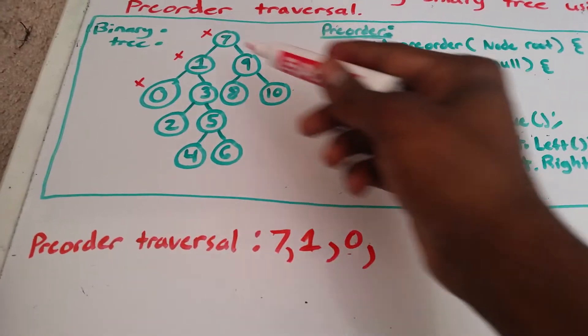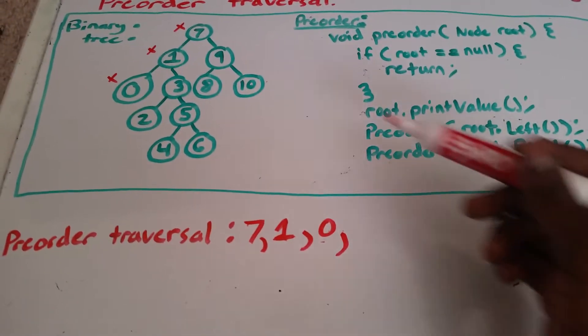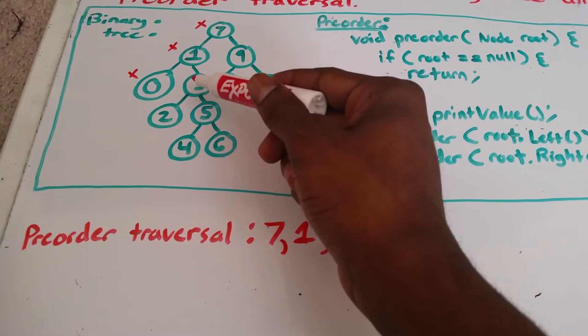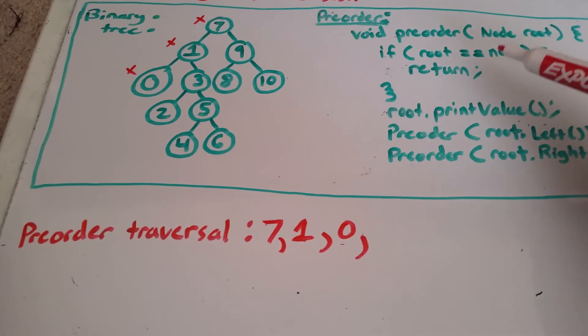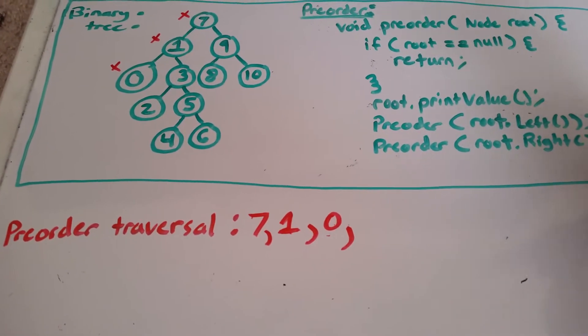We go back to 1. In 1, we went left. Now we need to go right. So if we go right, we'll see that we get the node 3. Is 3 null? No. 3 has a value, and the value is 3. So we go ahead and we print it.